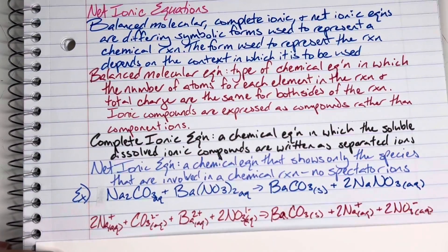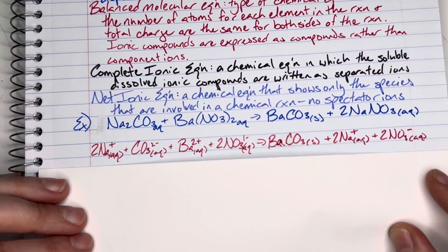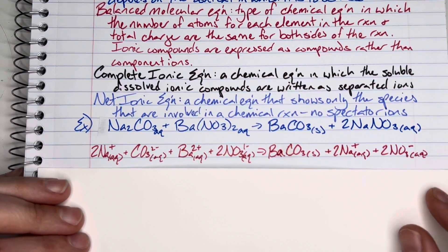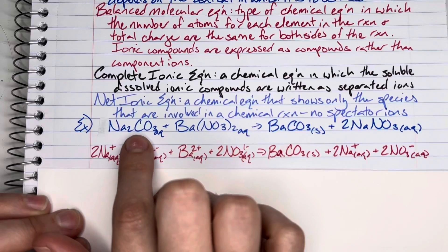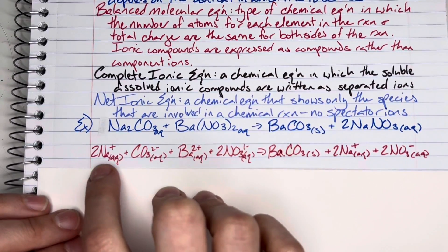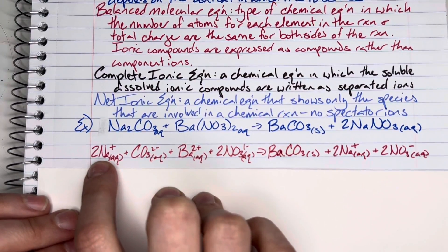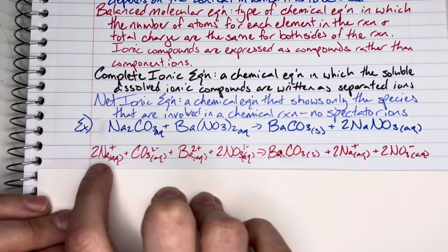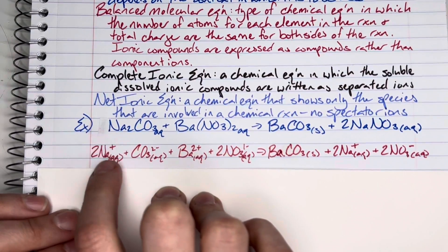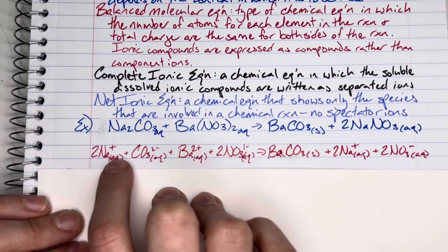I'm going to break any of the dissolved ionic compounds into their constituent ions. The sodium carbonate—those were both dissolved, they're aqueous. Keeping balance, I had two sodiums here, so I'm going to have two sodiums here. Each sodium has a charge of positive 1, so I'm representing that I have two sodium ions, each with a charge of positive 1, and it is dissolved.